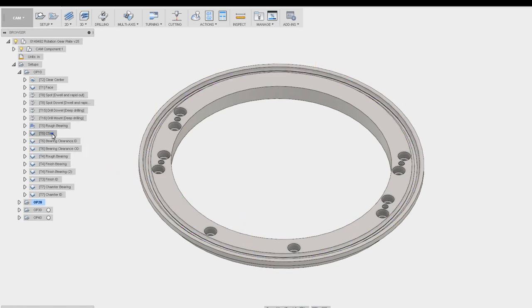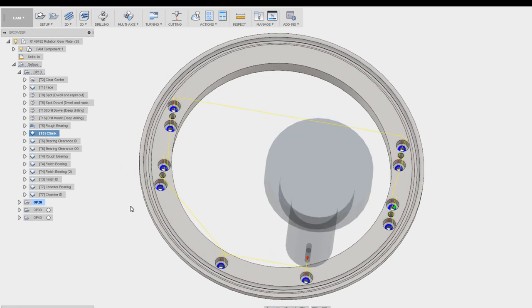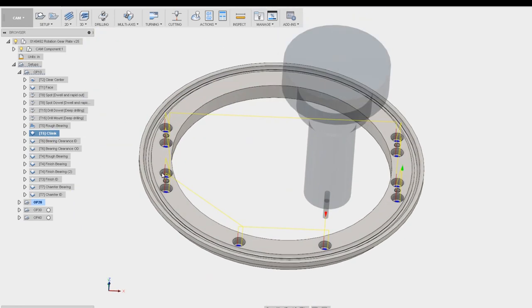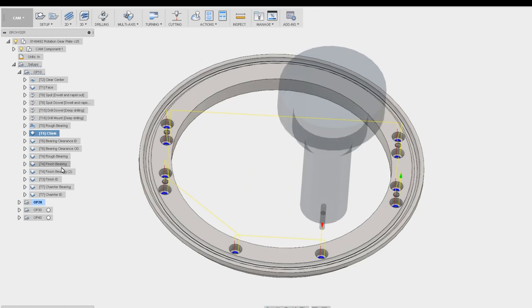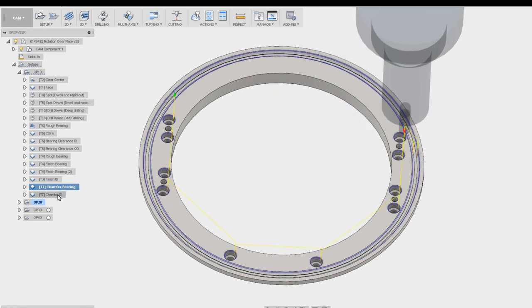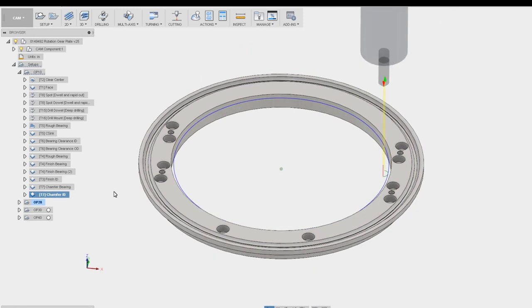Once we get the bearing in, we're going to countersink these as well. These are just straight through holes, your mounting holes for some bolts. Then we will run around and finish the ID, and then we're just going to chamfer the ID. That's OP10.